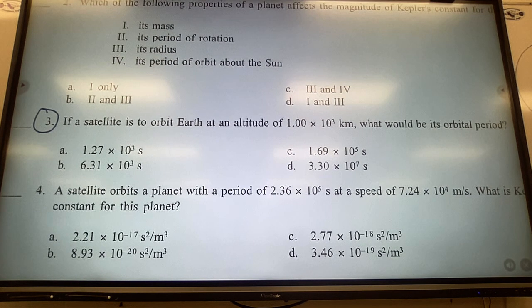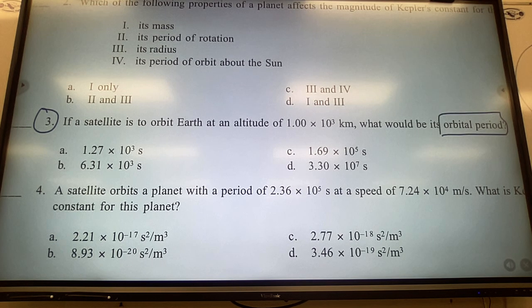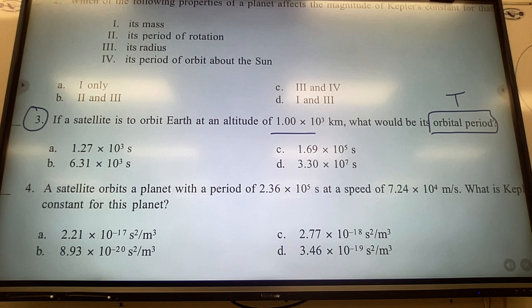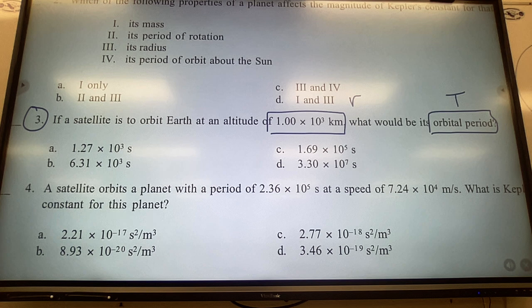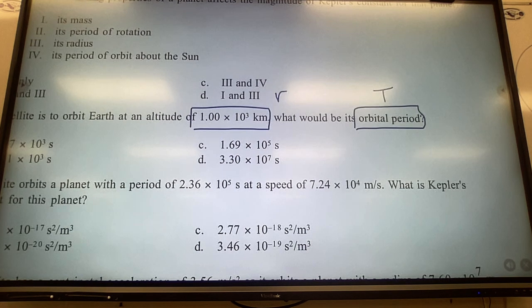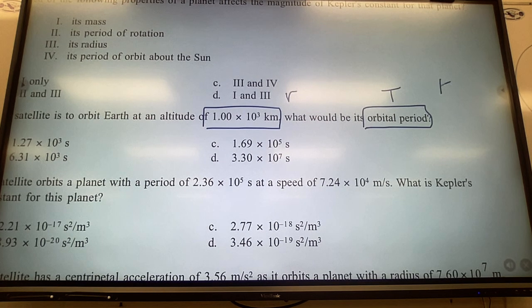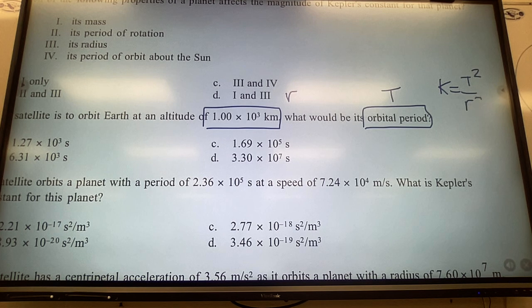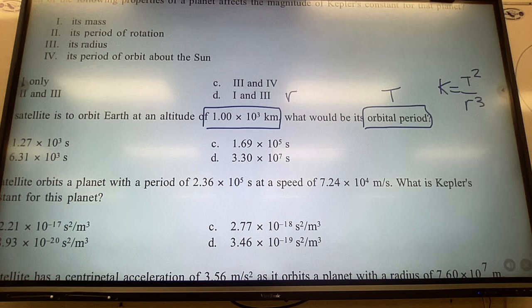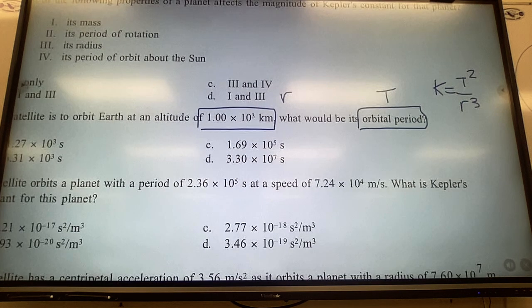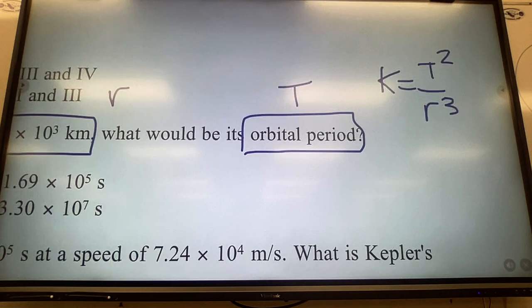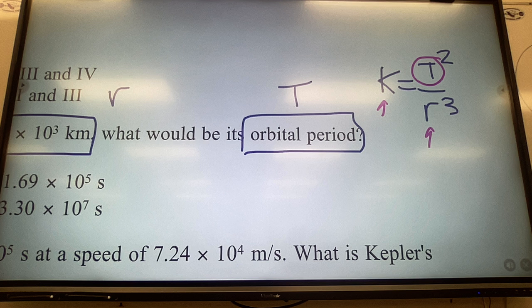If a satellite is to orbit Earth at an altitude of 1×10³ kilometers, what would be its orbital period? So I want the period. This is a satellite orbiting Earth. If I knew what Kepler's constant was for Earth - because all objects that orbit Earth have the same Kepler's constant - I could solve for T. So all I need to do is find R and find Kepler's constant for Earth.